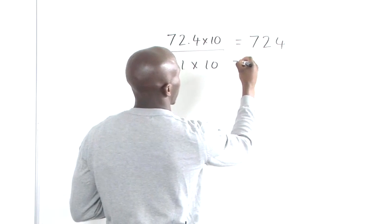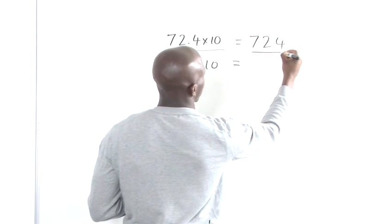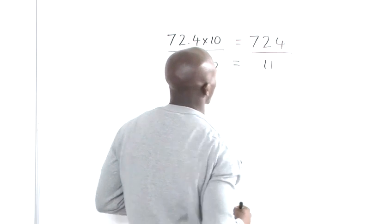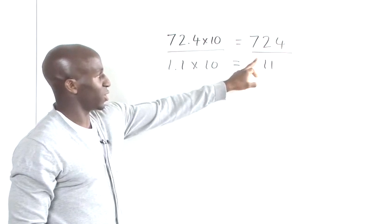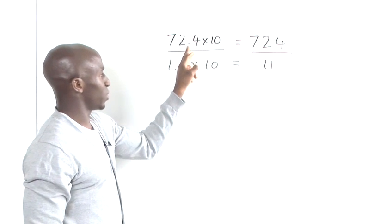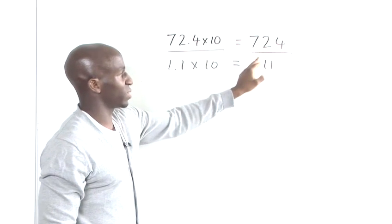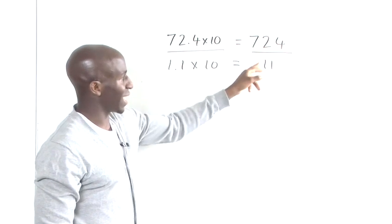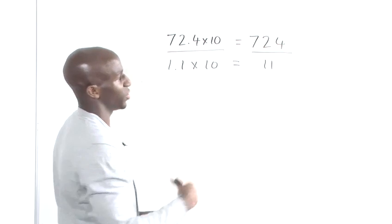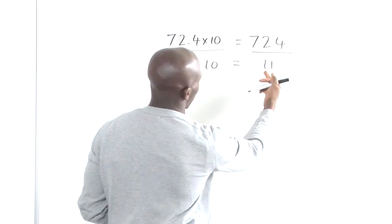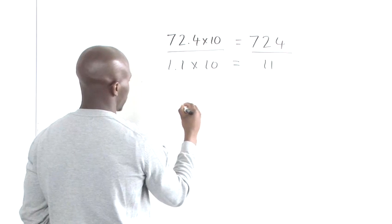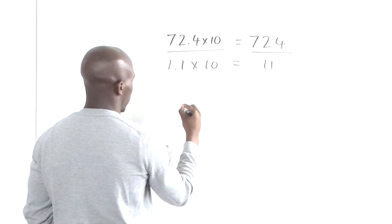So you've converted your normal decimal fraction into an equivalent fraction that has no decimals, and then you can progress with your normal long division. So we go to our tableau again.